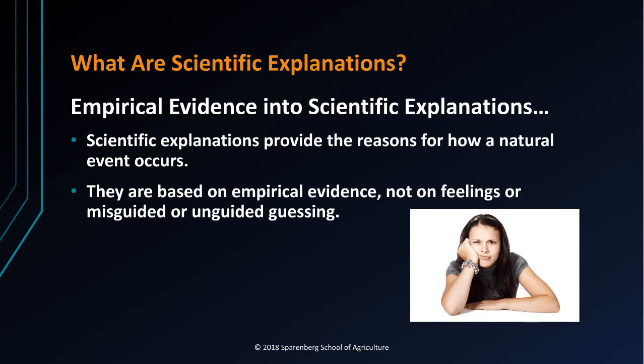Scientific explanations provide the reasons and a description for how a natural event occurs. If someone asks why some tree leaves turn red and some turn yellow, we look to a scientific explanation. Why do we have to put the milk in the refrigerator when we have not opened it yet? Why don't we have to put the can of condensed milk in the refrigerator? How do we make cottage cheese? All of these questions are needing a scientific explanation. Our answers need to be based on empirical evidence, not on feelings or misguided or unguided guessing.